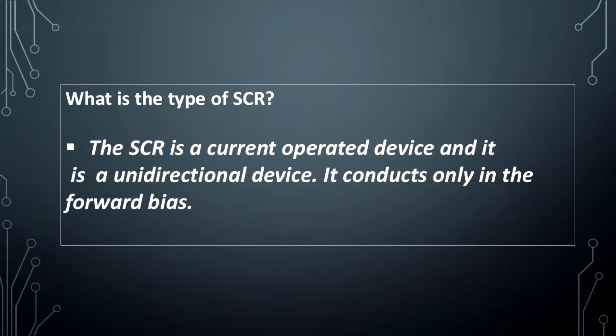What is the type of SCR? The SCR is a current operated device and it is a unidirectional device. It conducts only in the forward bias.